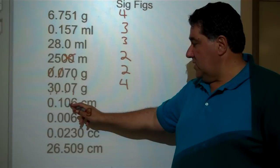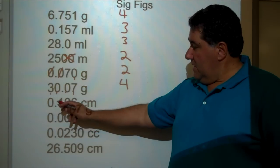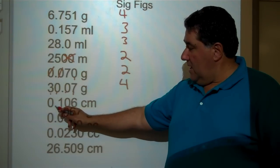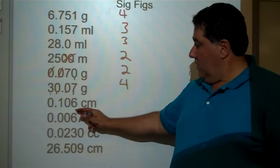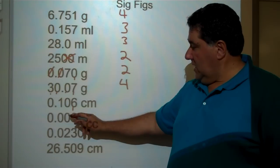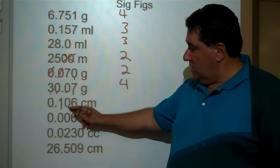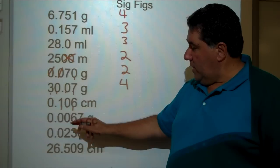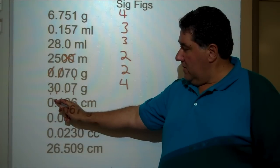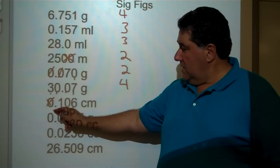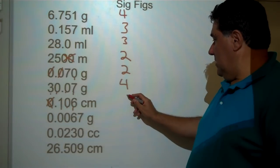0.106 centimeters. There is a decimal point here but there is no ending zero. We know the six and the one are significant. Any zero between two other significant figures is significant — however, the zero out in front is not significant. The total is three significant figures.